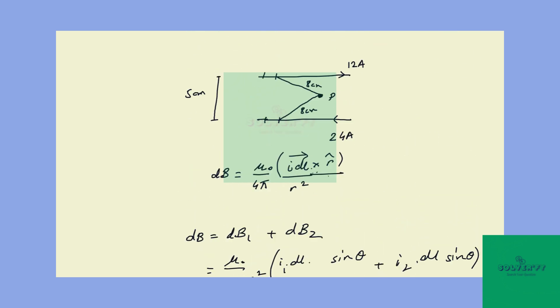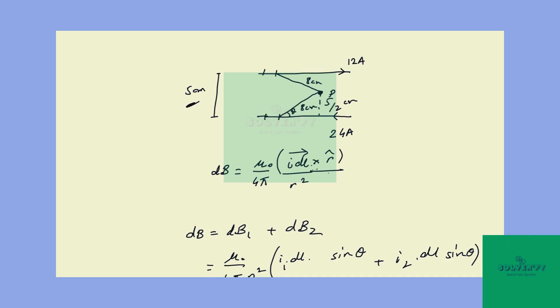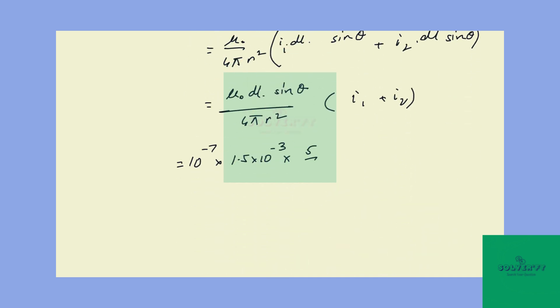For sine theta, if you see here, if this is theta, then it's perpendicular by hypotenuse. This perpendicular is 5 by 2 centimeters because this length is 5 centimeters. So you can write sine theta as 5 by 2 times 8.